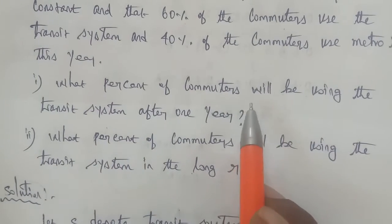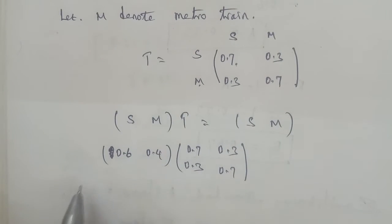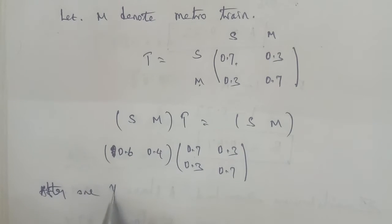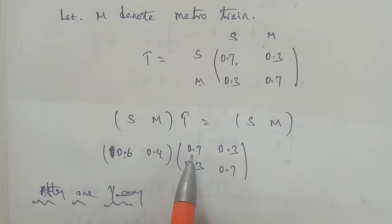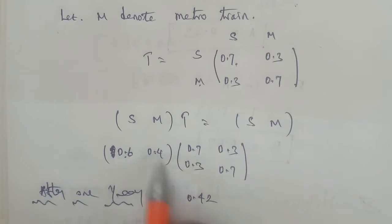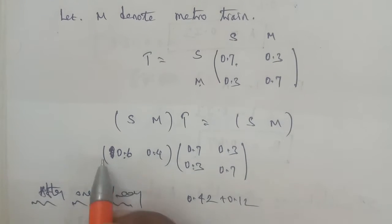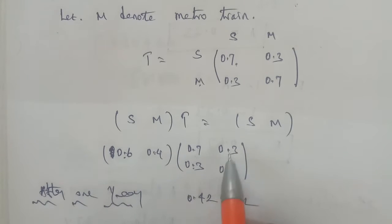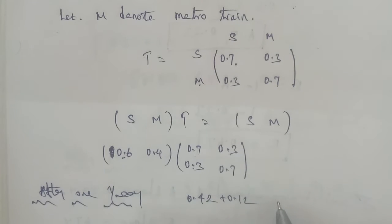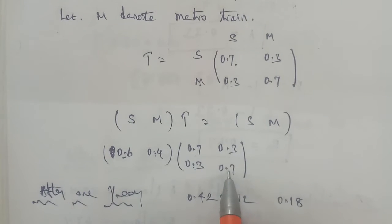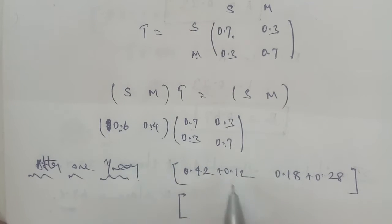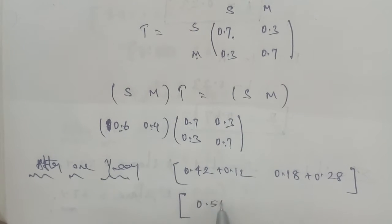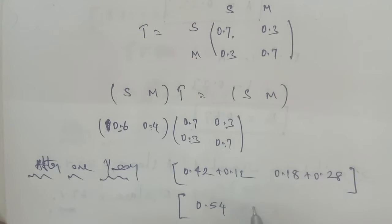What percentage of commuters will be using the transit system after 1 year? We apply row by column multiplication. First entry: 0.6 × 0.7 = 0.42, plus 0.4 × 0.3 = 0.12, giving 0.54. Second entry: 0.6 × 0.3 = 0.18, plus 0.4 × 0.7 = 0.28, giving 0.46.